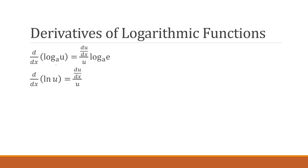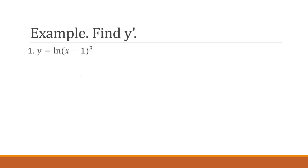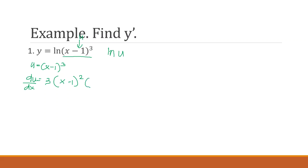Let's start answering some examples. For the first example, we need to find the first derivative y prime. As you can see, (x minus 1) raised to the 3rd power is our u, so this becomes ln u. Our u is (x minus 1) cubed, and the derivative of that with respect to x is 3(x minus 1) squared times the derivative of the inner expression, which is 1. So the derivative of u with respect to x is just 3(x minus 1) squared. The derivative of ln u is just du/dx all over the original value of u.